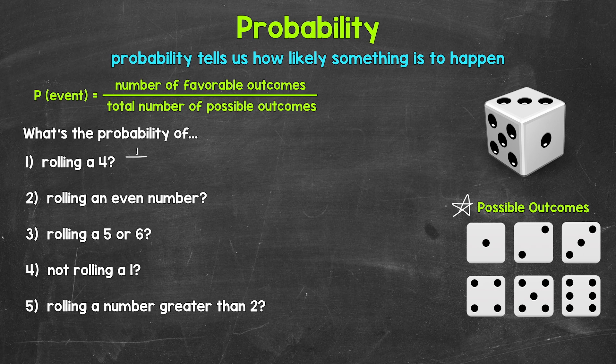Now we need the total number of possible outcomes — the total number of things that can happen. So how many possibilities do we have here? How many sides does the die have? Six. Our fraction is one over six — one sixth. We have a one out of six chance of rolling a four. Now as far as the decimal, we can divide the numerator by the denominator — the top divided by the bottom — to convert this fraction to a decimal. That's going to be 0.1...